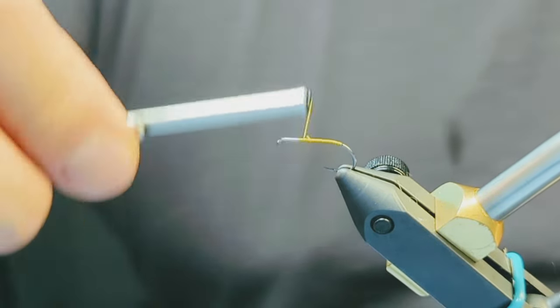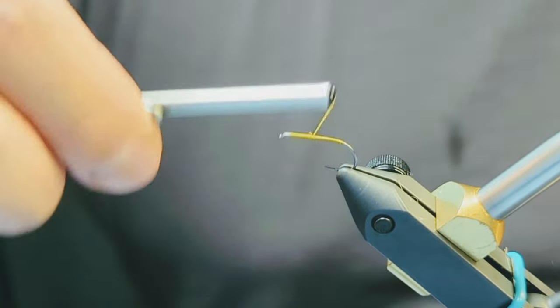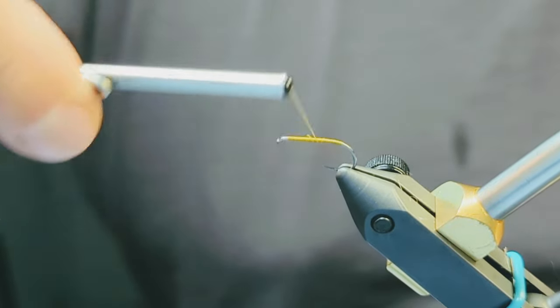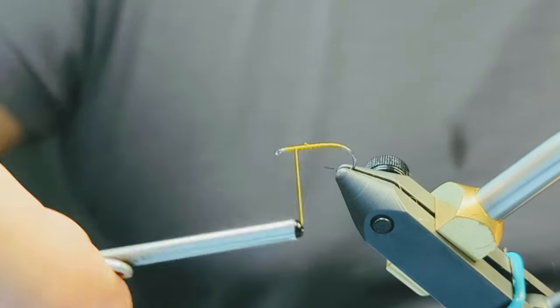The abdomen of this fly is just a thread base. The classic one is relatively flat but you can taper the body of yours if you'd like. Take wraps up and down the shank to form a smooth base and stop an eye length behind the eye of the hook.